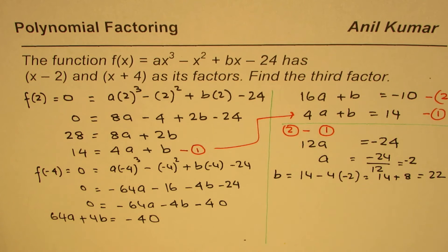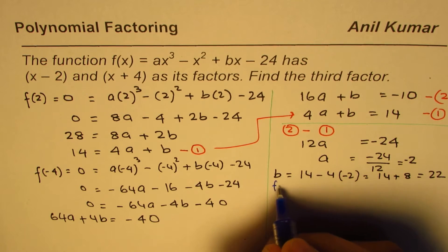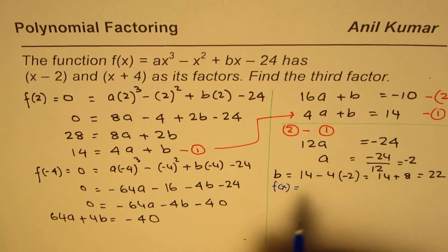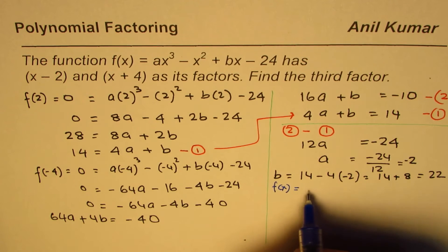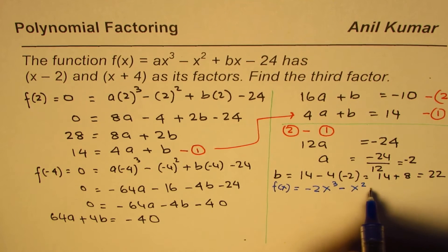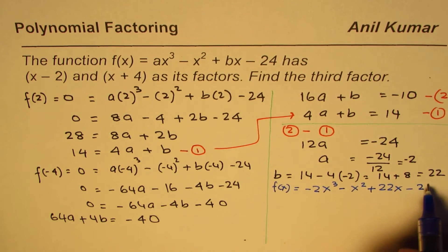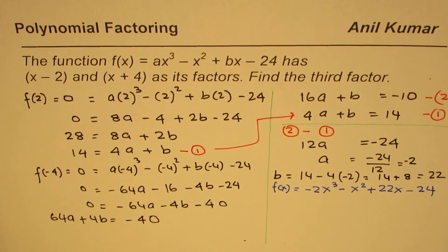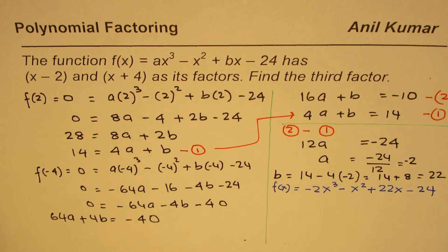That gives us the polynomial, and the polynomial is f(x) equals minus 2x³ minus x² plus 22x minus 24. That is the polynomial for us. Now we need to get the third factor.